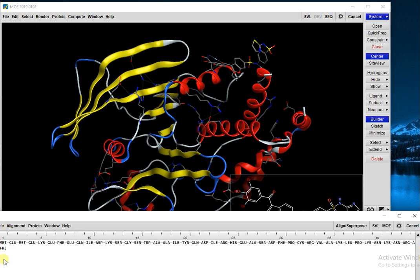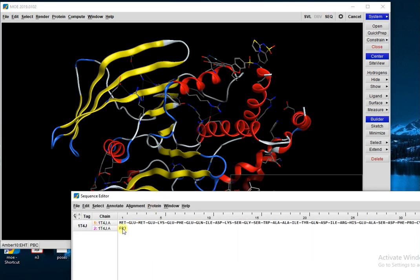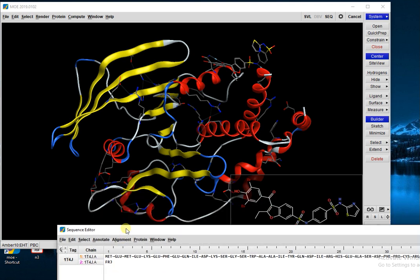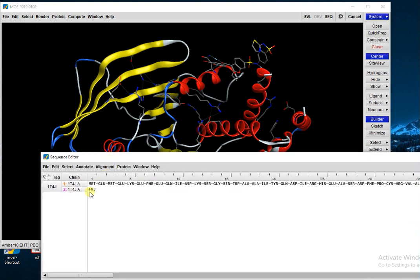Next step is go to Sequence and see if any water molecule is present. In this case, no water molecule is present. If water molecules were present, you would see HOH listed here. Then you would simply right-click on that line and delete that water molecule.